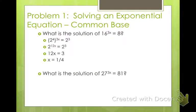So what about this one? What's the solution of 27 to the 3x equals 81? So, the first thing we have to ask ourselves is, do 27 and 81 have a common base? And yes, they do. That's 3. So 27 is 3 to the 3rd to the 3x power equals 3 to the 4th.